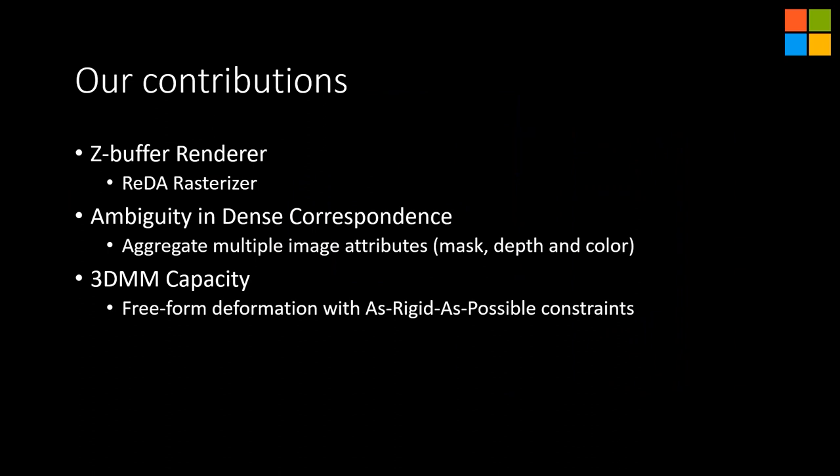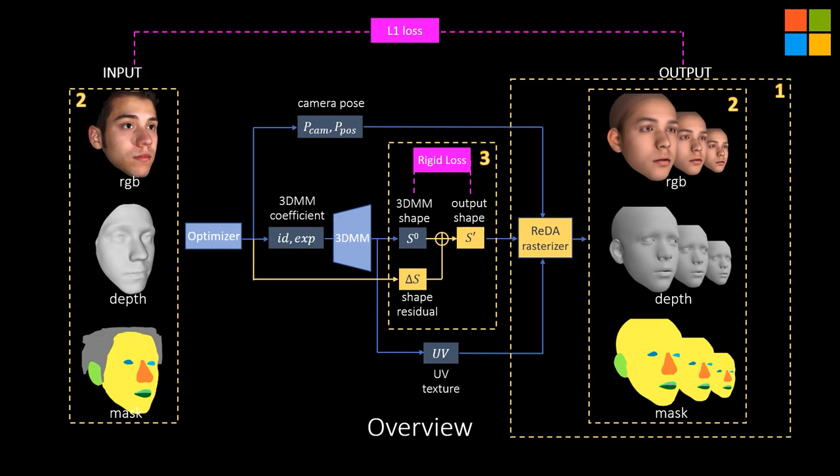To implicitly learn the correspondence between inputs and geometry, geometry priors such as 3DMM are often employed, but the capacity of those models is limited to the number of scans during their training. To overcome those difficulties, we propose our REIDA framework, which has the following three major contributions. First, we replace the z-buffer renderer with our REIDA rasterizer, which operates rendering in UV space with multi-scale outputs and is fully differentiable. Second, we aggregate multiple image attributes beyond color, such as face-parsing masks and depth, to reduce the ambiguity in learning correspondence. Third, we extend 3DMM capacity using a free-form deformation layer with an as-rigid-as-possible constraint. Our proposed method is end-to-end and fully differentiable.